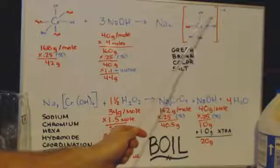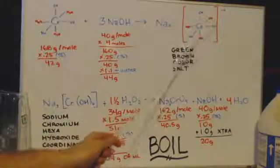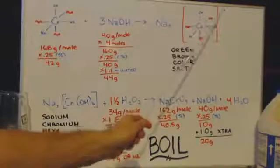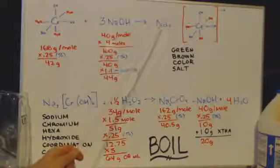Each time it takes a proton off, and each time it used to be neutral - now it's negative one, negative two, negative three. And I have that right there, and it does it three times. That's why you get three sodiums.